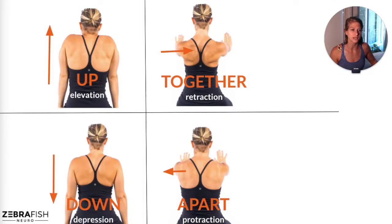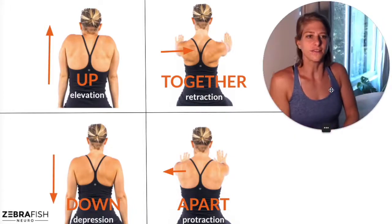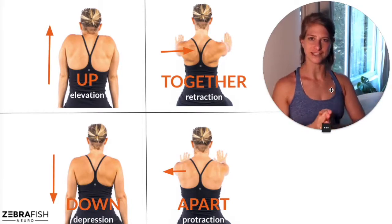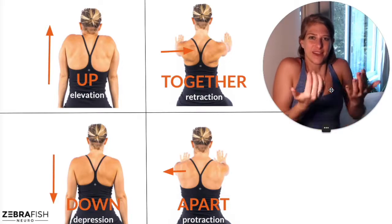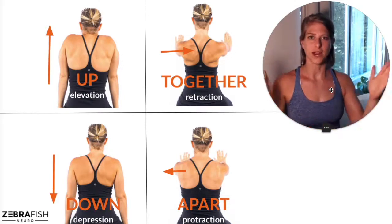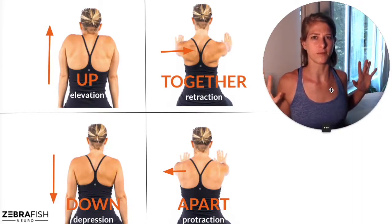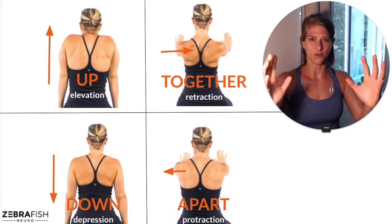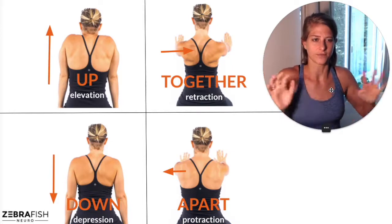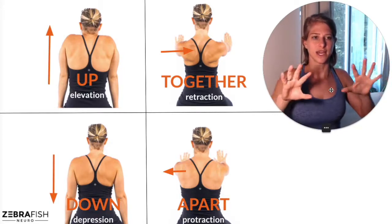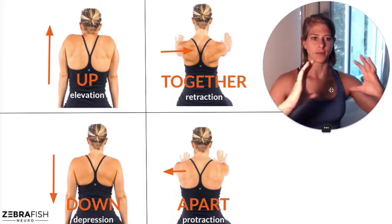Let's play with some of those movements together. Sitting up nice and tall, we're going to lift our shoulders up towards our ears — that's called elevation. Then the opposite: dropping the shoulders down out of your ears. Next, we're going to practice pulling the shoulders together — opening up in the front and drawing the shoulders together in the back. And the reverse, which is a little bit more challenging for a lot of people, is drawing the shoulders apart from one another — they sort of glide around the rib cage around the side.